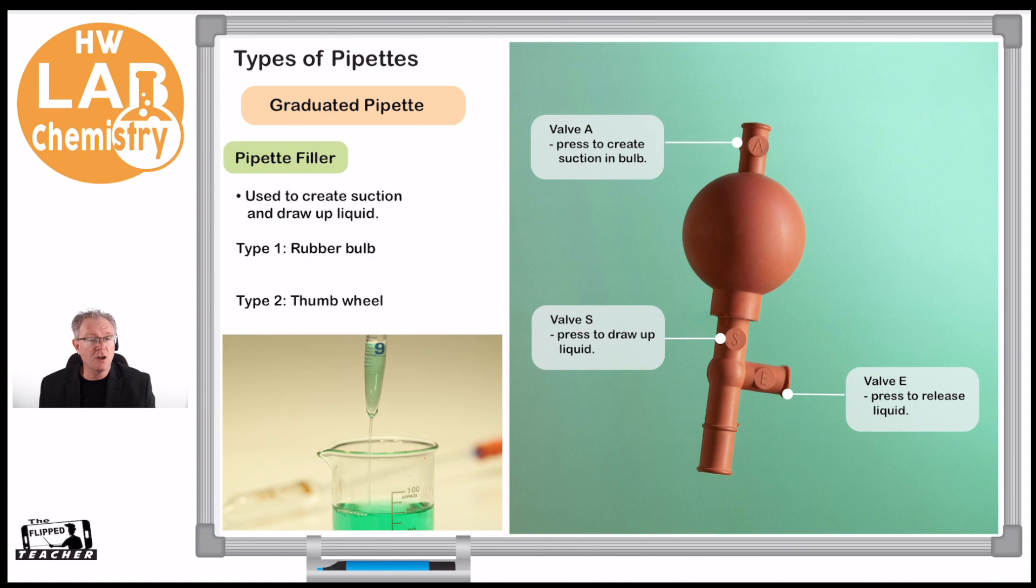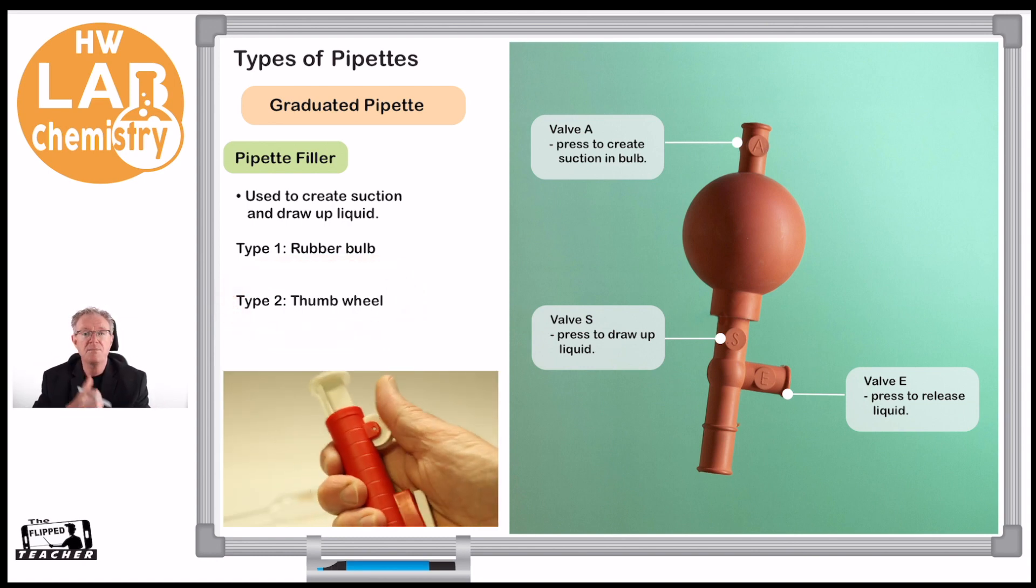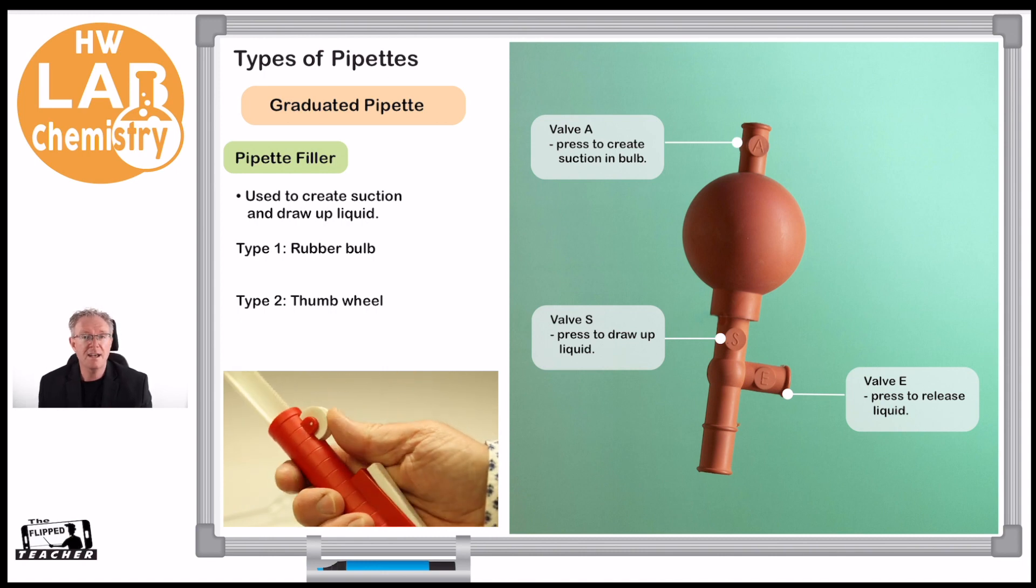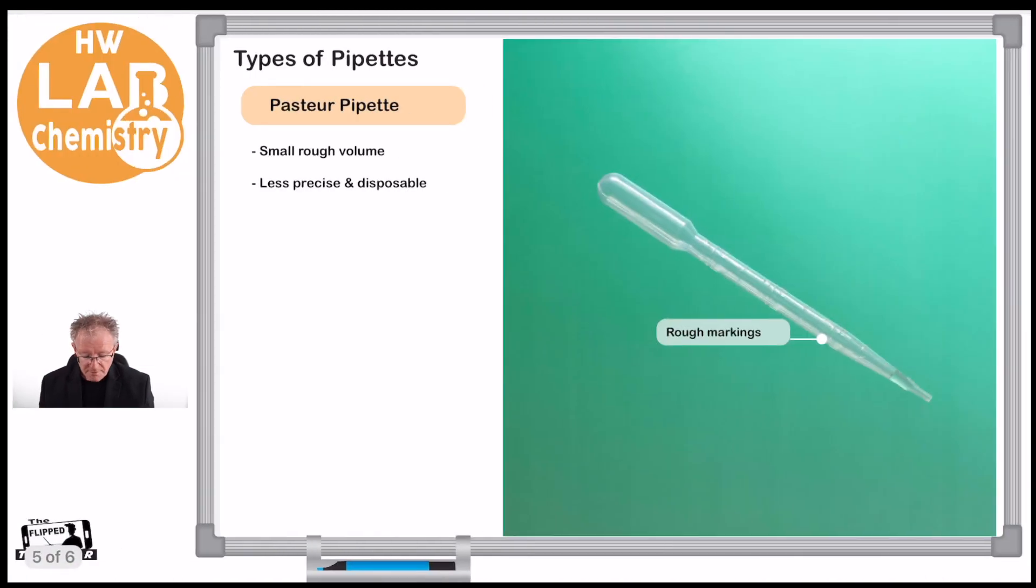You can see that here in the little video showing you how to press those particular areas. Another type is called a thumb wheel type, where we have like a long cylindrical plastic and we just move our thumb, and that moves a ratchet system inside. That also allows the liquid to be sucked up and dispensed.